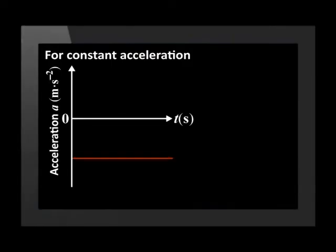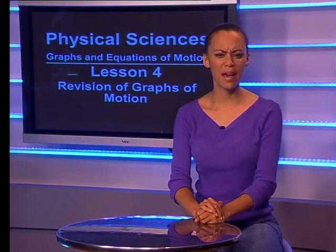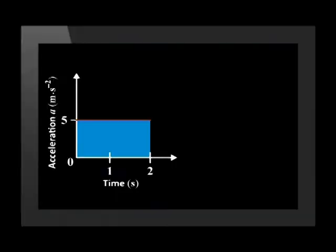Remember that since acceleration is a vector, a negative acceleration could also indicate a change in direction. So a graph showing a negative acceleration could actually mean that the object is speeding up in the opposite direction, thus the change in sign. This may seem a bit difficult to understand, but we will work through this in more detail when we look at the examples in this series. In both cases, the area between the graph and the x-axis gives the velocity at a certain point in time.